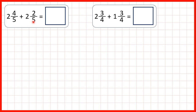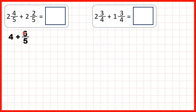But 6 fifths is an improper fraction, so we're going to need to do something slightly different here. Adding our whole numbers, 2 plus 2 is 4, so we can write 4 plus 6 fifths. But we can't write 4 and 6 fifths as our answer, because we can't have an improper fraction in a mixed number — we can't have a fraction where the numerator or top number is larger than the denominator. So what we need to do is change those 6 fifths back into a mixed number.